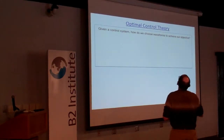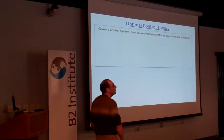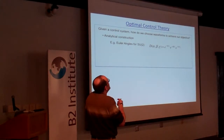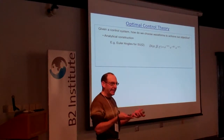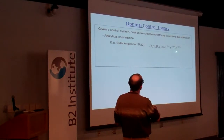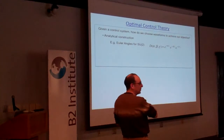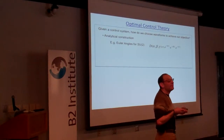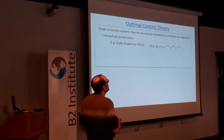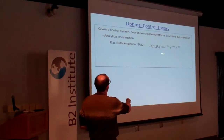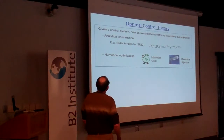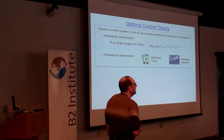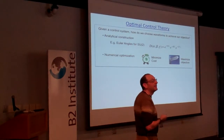The question is: given some control system, how do we choose the waveforms to achieve our objective? In some cases we know a solution because there's an analytic decomposition — we have the Euler angle decomposition. But quite often for more complicated groups, those analytic decompositions don't exist, or if they do, they may not have the pieces that belong to the group. So quite often in most cases we turn to numerical optimization, either minimizing some cost or maximizing some objective.